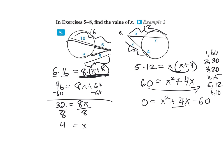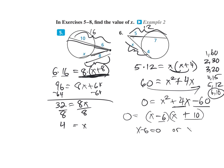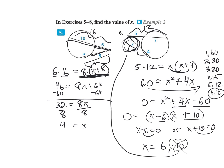So we want positive 10 minus 6, giving a positive 4, and negative 6 times positive 10 gives negative 60. So X minus 6 equals 0 or X plus 10 equals 0, giving X equals 6 or X equals negative 10. X can't be negative, so the answer is X equals 6.